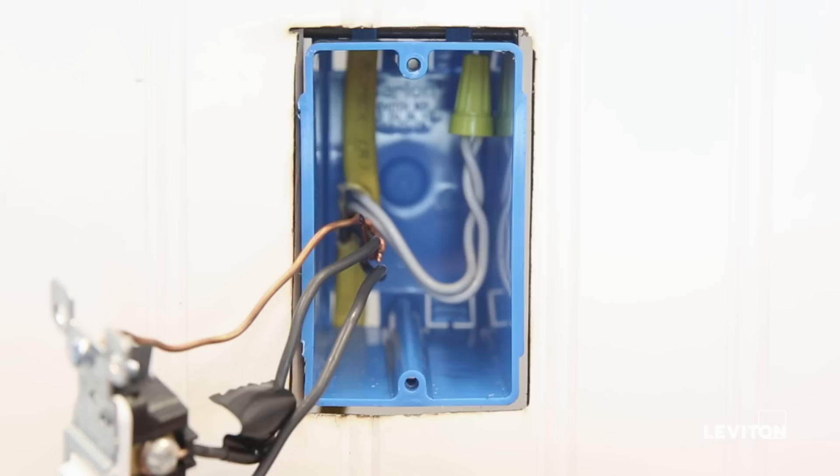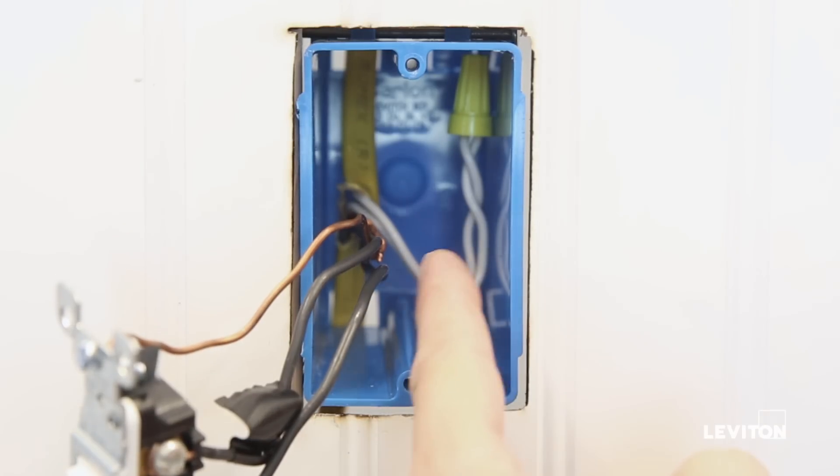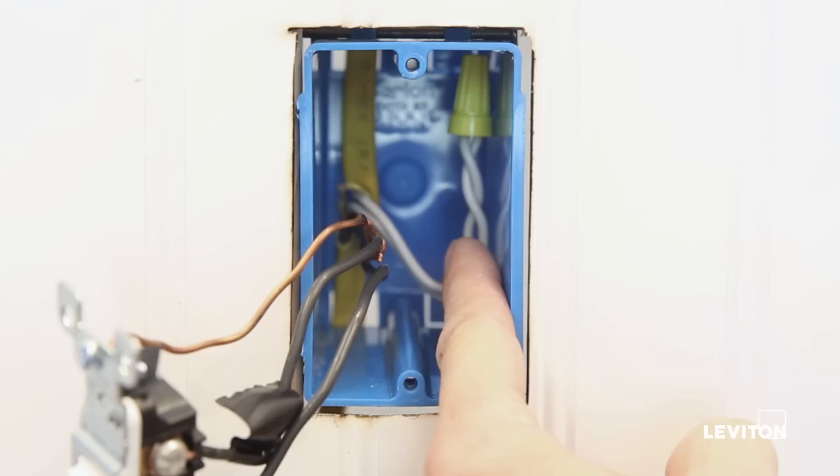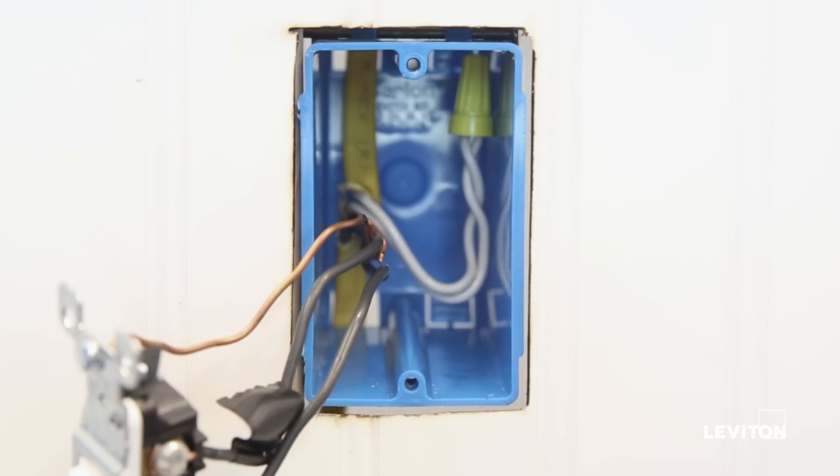If the two controlled leads are black, look in the box. You should find two whites twisted together, capped with a wire fastener. You have a neutral.